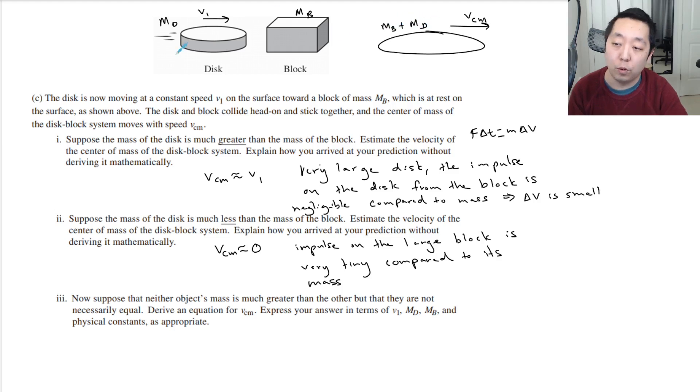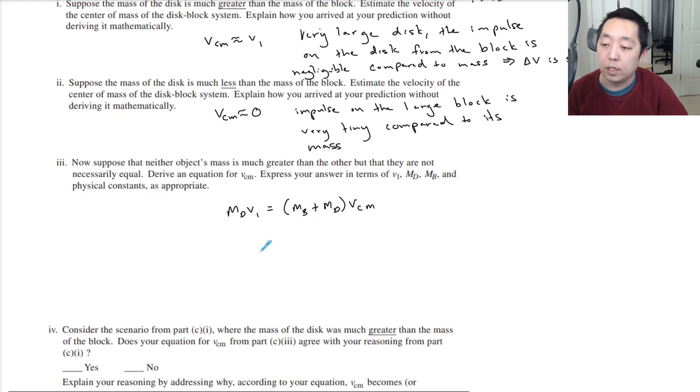This is MB plus MD. So this is the before collision, this is the after collision, we do conservation of momentum. We would say MDV1 has to equal MB plus MD times VCM, and you can solve for VCM.